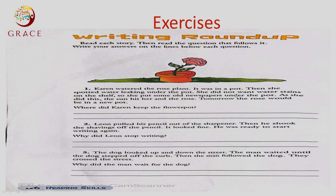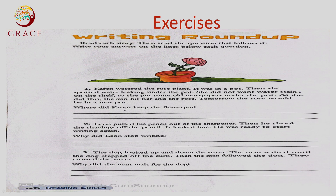She didn't want water stains on the shelf, so she put some old newspaper under the pot. She put some old newspaper under the pot. As she did this, the sun hit her and the rose. The rose would be in a new pot. Where did Karen keep the flower pot?